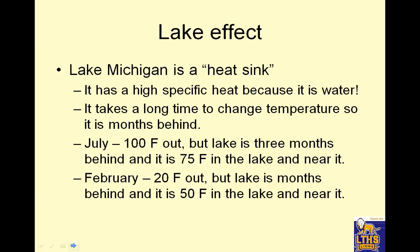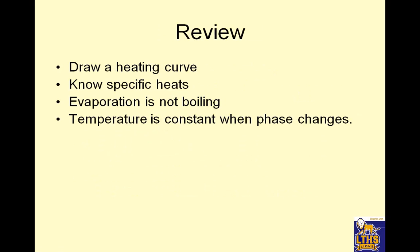Lake effect: Lake Michigan is a heat sink. It has a high specific heat because it is water, so it takes a long time to change temperature — it is months behind. In July it's 100 degrees Fahrenheit out, but the lake is three months behind at about 75 degrees. In February it's 20 degrees Fahrenheit out, but the lake is months behind at around 50 degrees Fahrenheit — so near the lake it will be warmer.